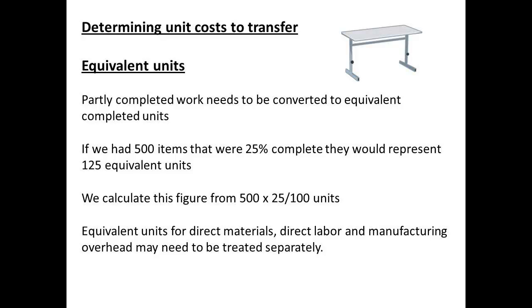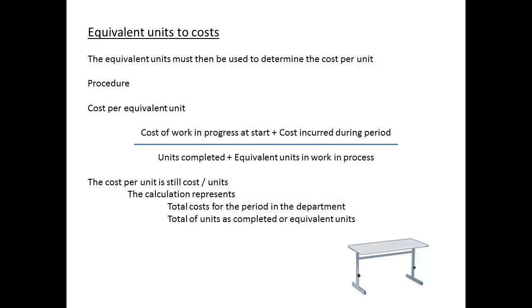The costs refer to transfer of completed items between the departments and eventually to the finished goods. At the start and end of any period, there are going to be items that are not complete, and the cost of these items has to be determined. Process costing makes use of the concept of equivalent units. If an item was only 25% complete, then it would take four of these items to make up an equivalent of a completed unit. The equivalent units for direct materials, direct labour and manufacturing overhead are treated separately. Equivalent units are used to determine cost per unit — total cost divided by completed units for a period — calculated as cost of work in progress at the start plus costs incurred during the period, divided by units completed plus equivalent units for work in progress.